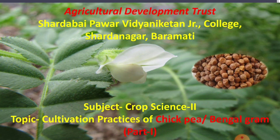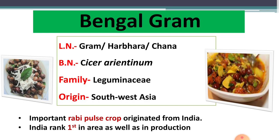See the botanical description of this crop. This crop is called as chickpea, Bengal gram, Chana — these are other names of this crop. The local name is gram. In Marathi, it is called as Harbara or it is also called as Chana. The botanical name of gram is Cicer arietinum.